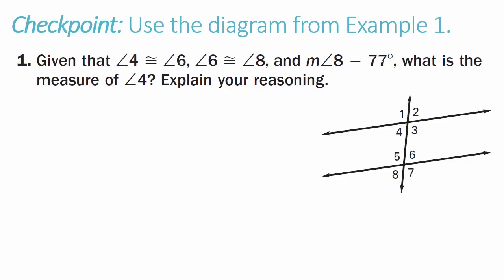Checkpoint problem number 1. Use the diagram from Example 1. Given that angle 4 is congruent to angle 6, angle 6 is congruent to angle 8, and the measure of angle 8 is 77 degrees — what is the measure of angle 4? Explain your reasoning.